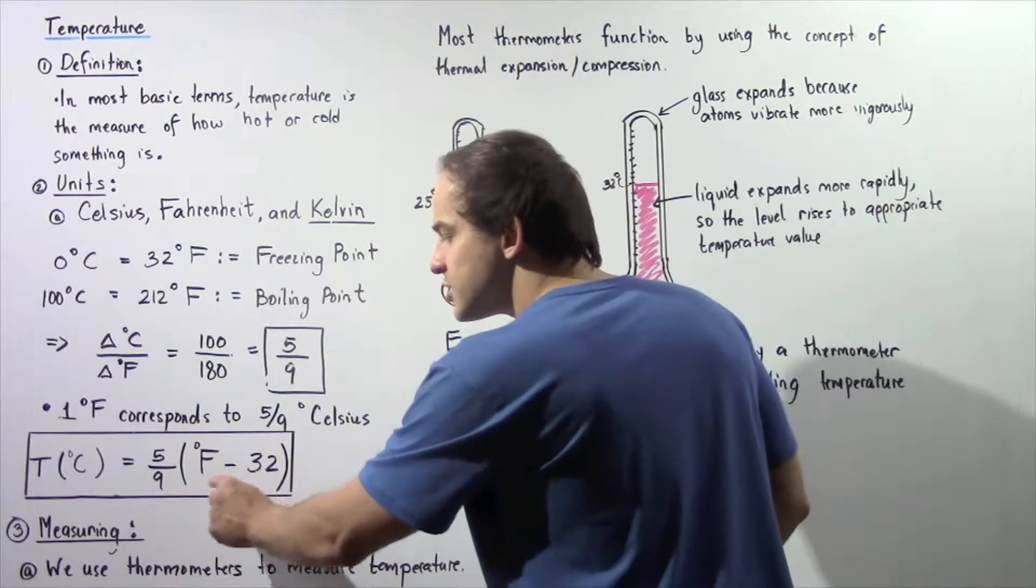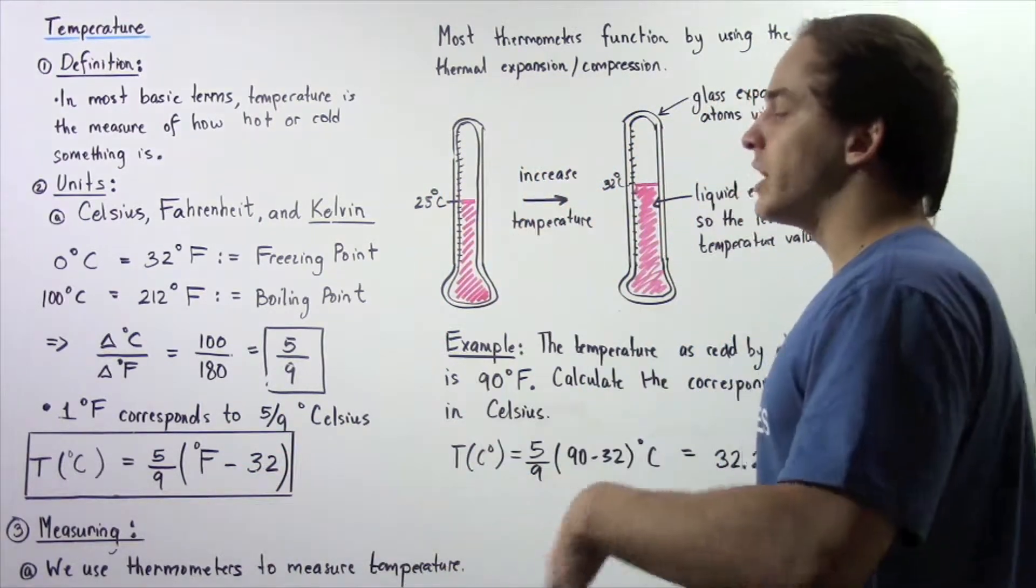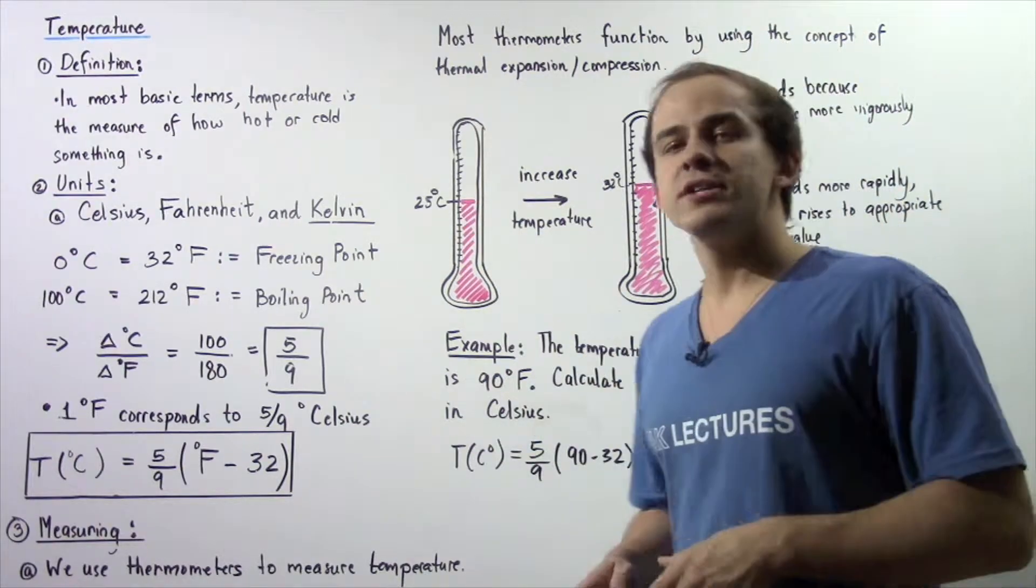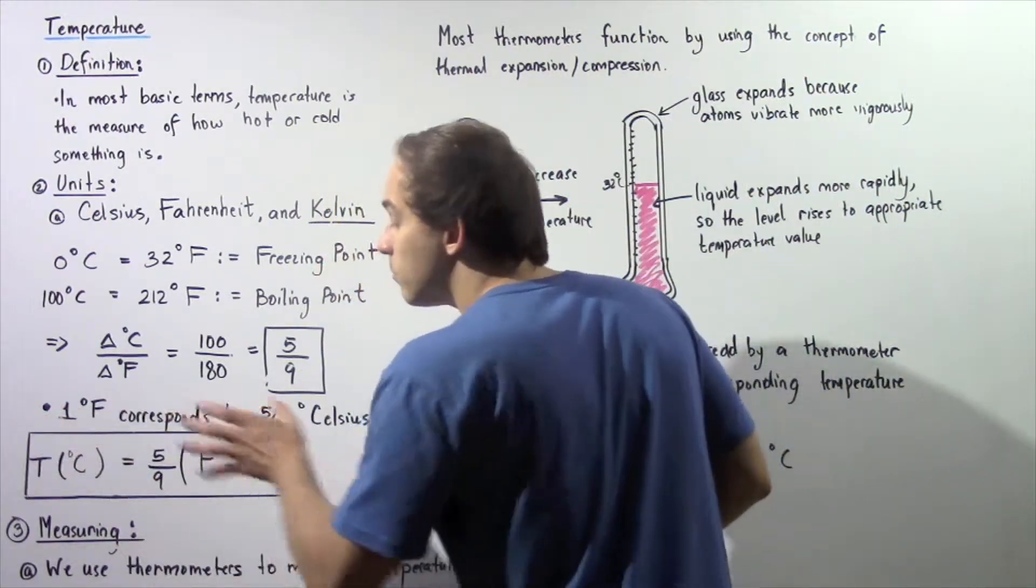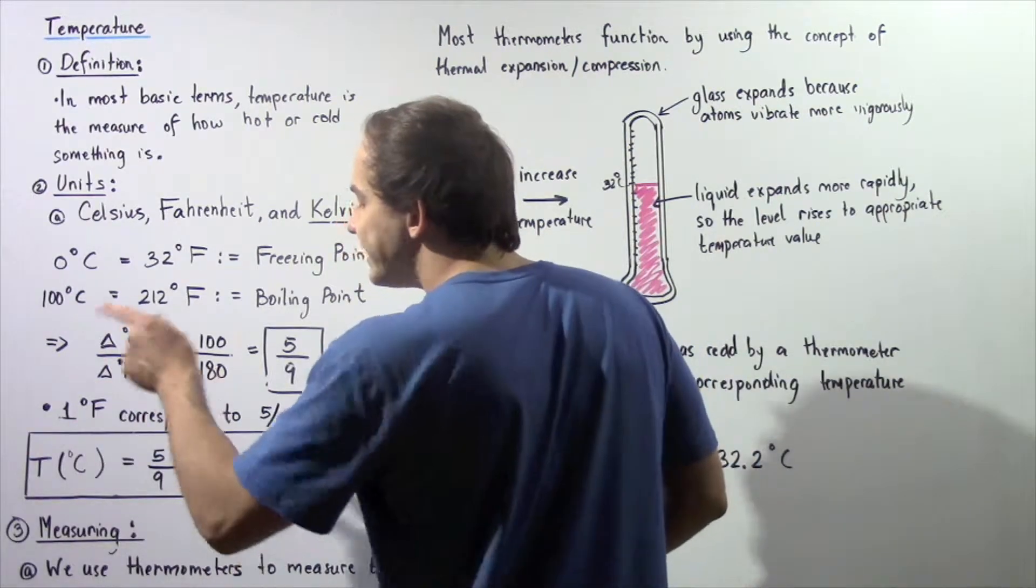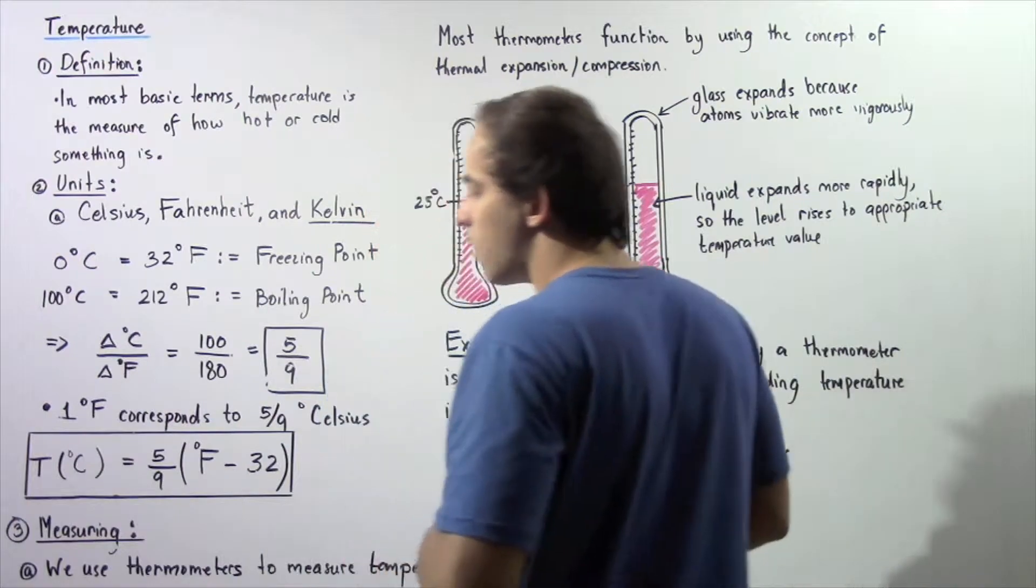If we solve for this, we can find a formula that gives us the temperature in Fahrenheit knowing the temperature in Celsius. We simply multiply both sides by nine divided by five, and then we add 32 to both sides.